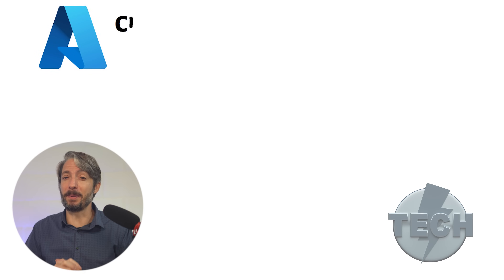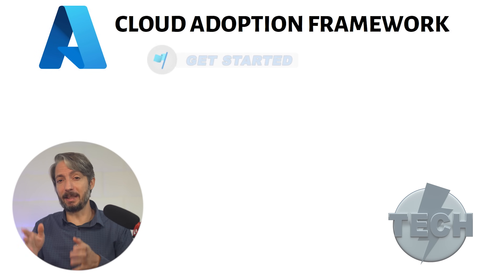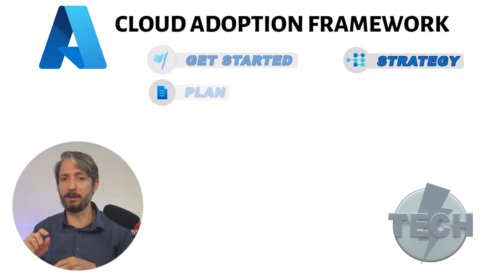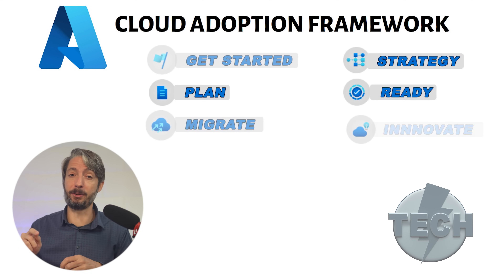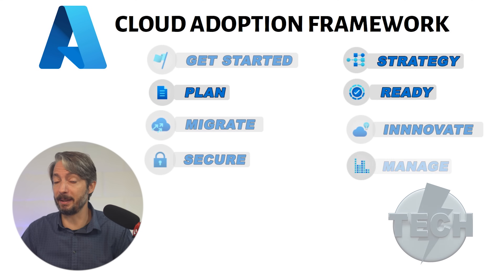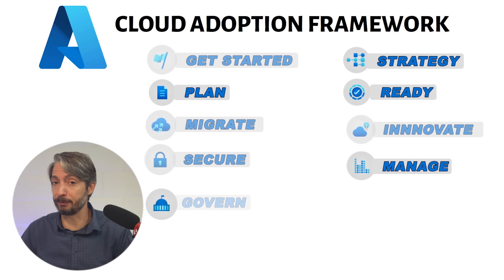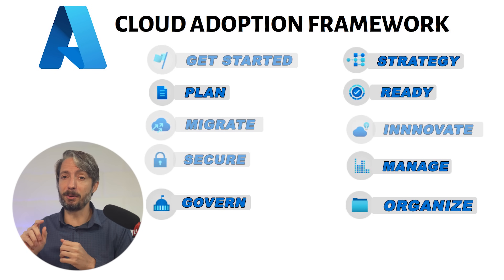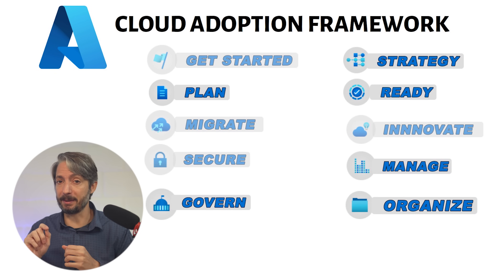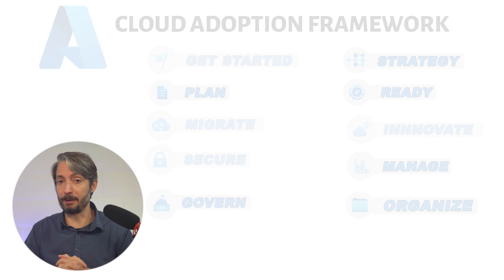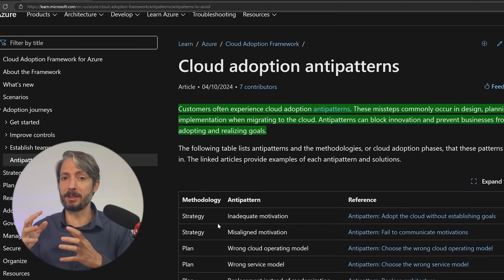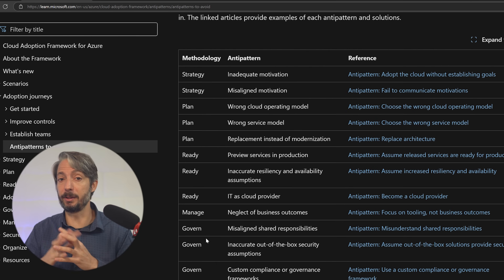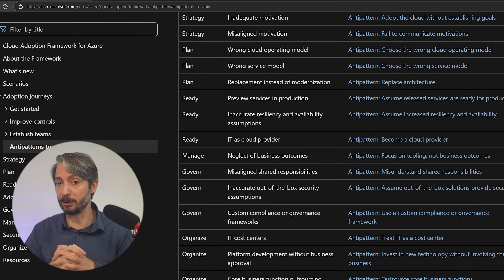In short, the Microsoft Cloud Adoption Framework contains several pillars which explain how to bring your business successfully to the cloud. See my other video linked in the description if you want to deep dive into the Cloud Adoption Framework. This framework also contains a list of anti-patterns — things you should avoid like the plague for your cloud adoption. As you can see from this list, there are 16 anti-patterns belonging to the different pillars of the Cloud Adoption Framework.